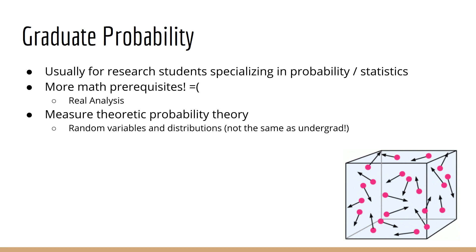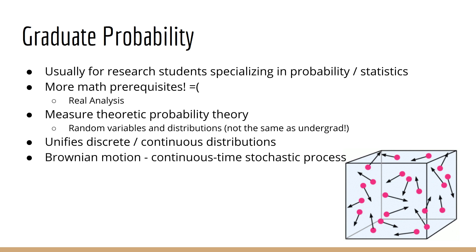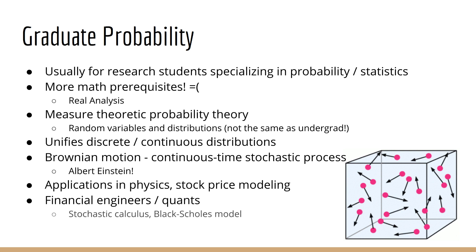One useful thing about measure-theoretic probability is that it unifies discrete and continuous distributions. You might learn about a specific type of continuous time stochastic process known as Brownian motion. If you know your history, you might recognize Brownian motion as something that Albert Einstein worked on. As you know, Brownian motion is important for describing the motion of particles in physics, but also for describing the movement of stock prices. So financial engineers, also known as quants, are also interested in graduate-level probability. This leads to the study of stochastic calculus, the Black-Scholes model, and so forth. These are standard tools in the financial analyst toolbox.